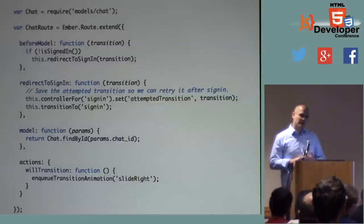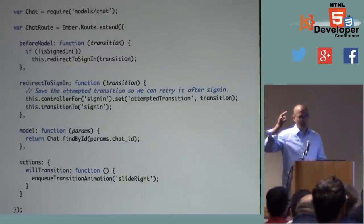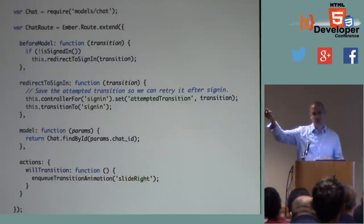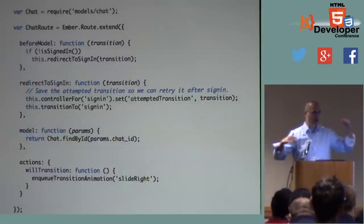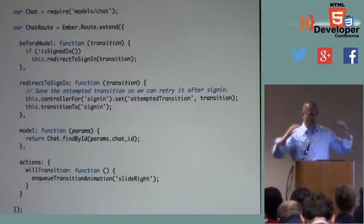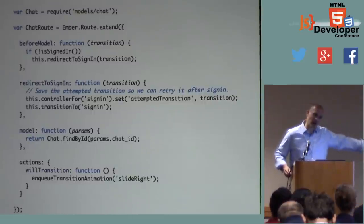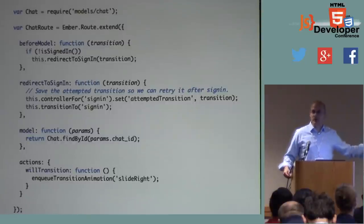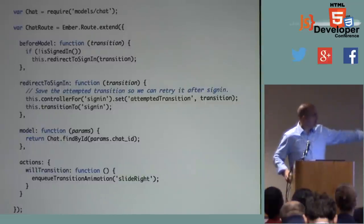What happens if I hit the back button in this app? The router watching the URL will notice the change — either a hash change or a popstate event if using HTML5 history — and now has a URL it can dispatch on. It says who's the route for this URL, who needs to manage this. Meanwhile, the current chat route gets a will transition action — it knows it's going away and gets an opportunity to do stuff in that hook.